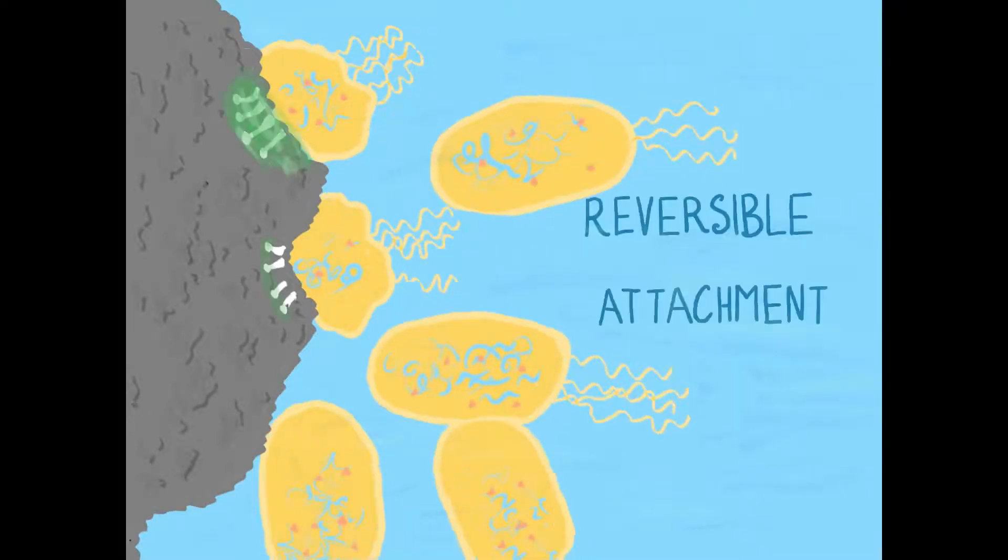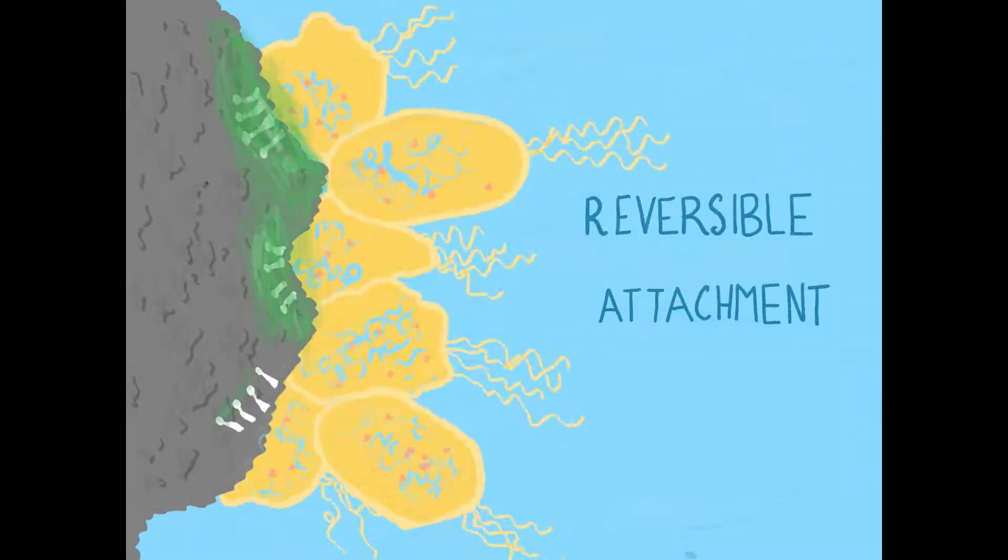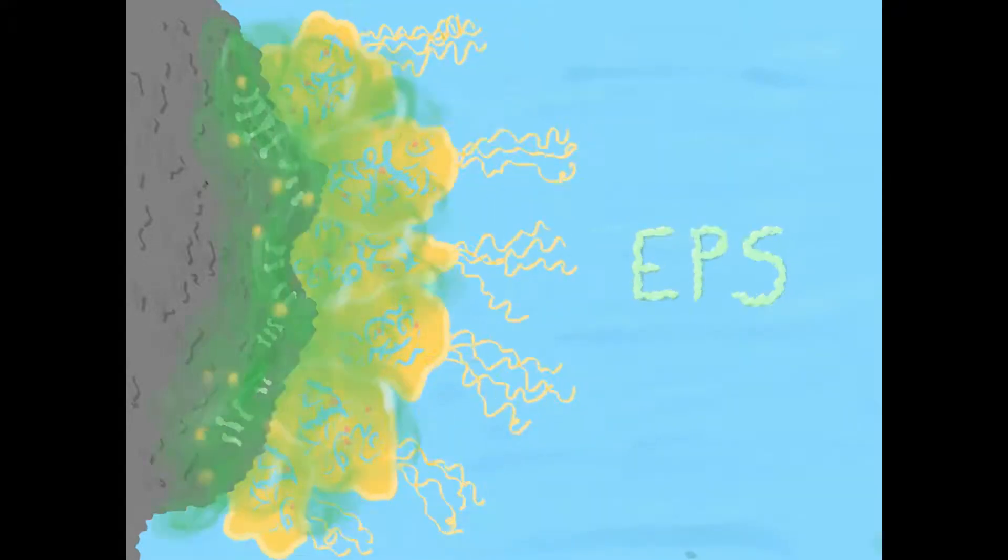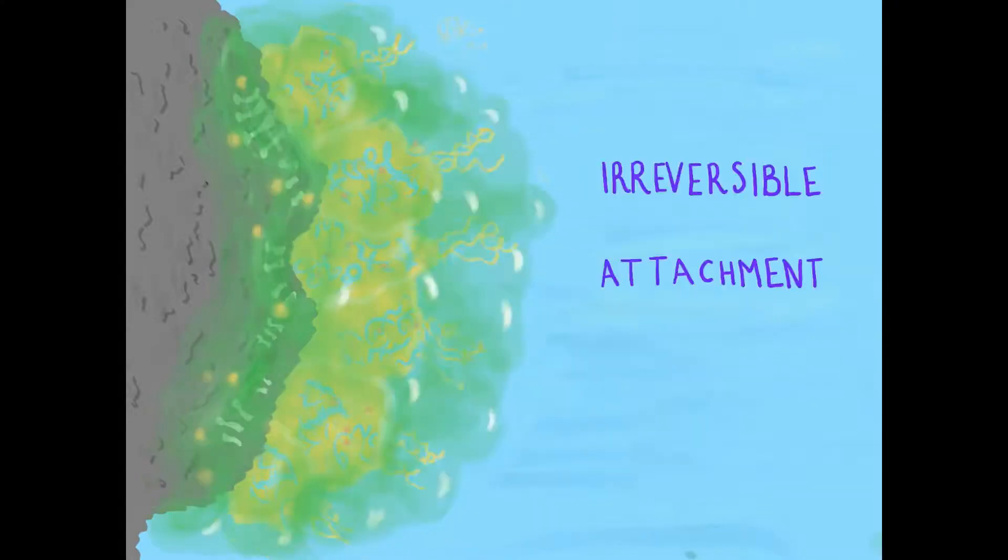The next stage of formation is reversible attachment, meaning that the cells could be removed by gentle rinsing. Then comes the EPS, which stands for exo-polymetric substances, essentially a fancy way of saying a polymer-based slime. Thanks to the EPS, the next stage is irreversible attachment.